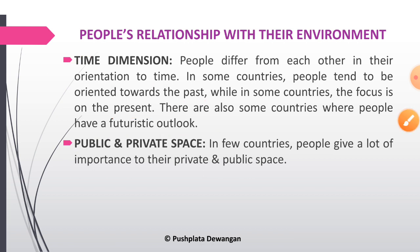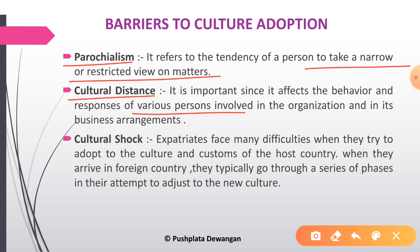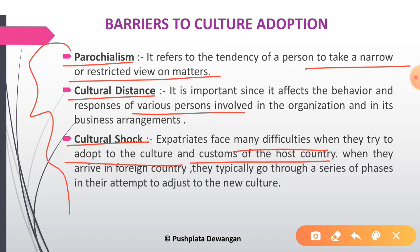Next we will study the barriers to culture adaptation. The first barrier is parochialism, which means generally focusing on narrow things and avoiding broader perspectives. It refers to the tendency of a person to take a narrow or restricted view on matters. The next barrier is culture distance, which is important since it affects the behavior and responses of various persons involved in the organization and its business arrangements. The third barrier is culture shock — persons face many difficulties when they try to adopt the culture and customs of a host country. When they arrive in a foreign country, they typically go through a series of phases in their attempt to adjust to the new culture.